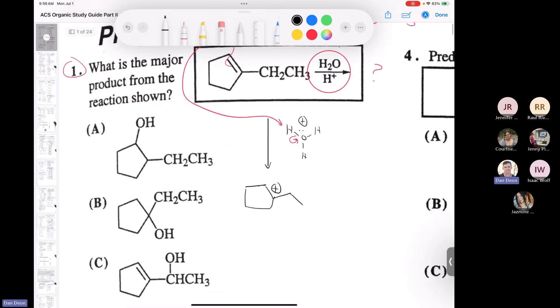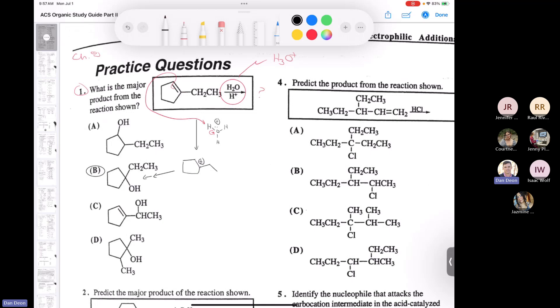It's not going to rearrange. Then water is going to come in as a nucleophile and attack, and it is going to give me B. So after nucleophilic attack and proton transfer, I'm going to end up with this alcohol here. Number two.